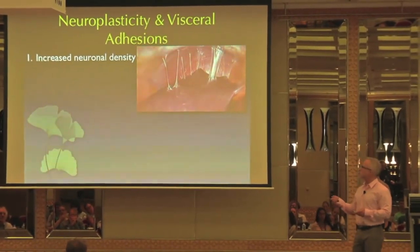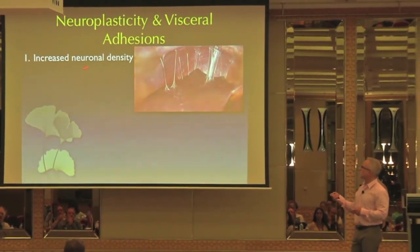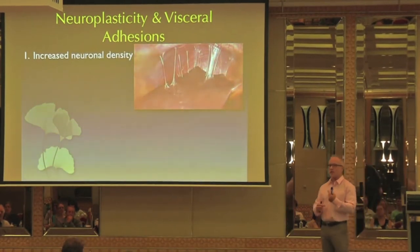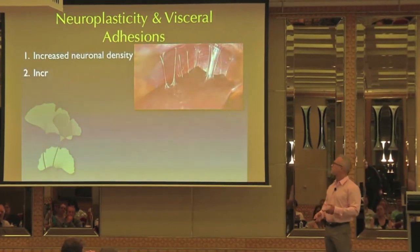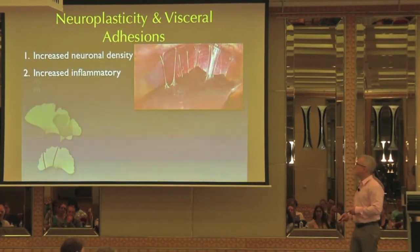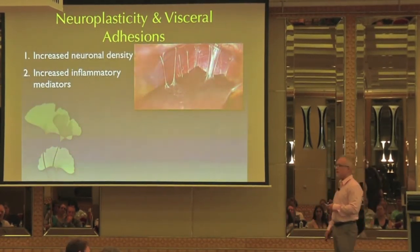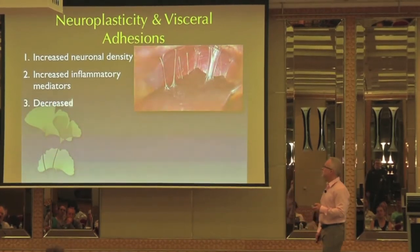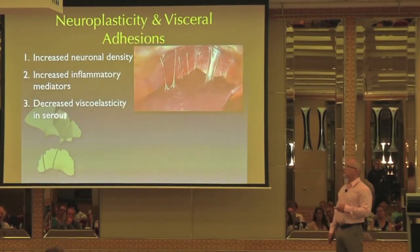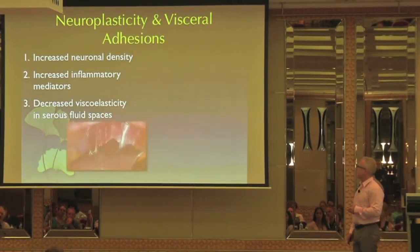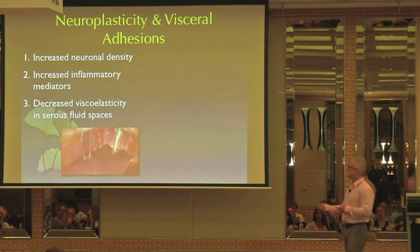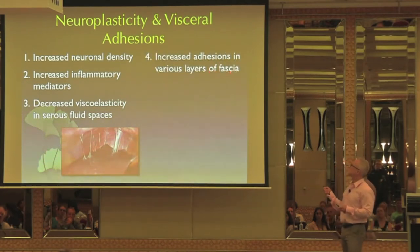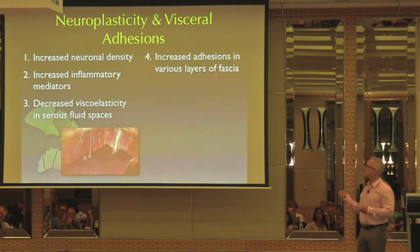We end up with increased neuronal density — we talked about how we have that increase in neurons. Increased inflammatory mediators, the cytokines that get produced. Decreased viscoelasticity in the serous fluid space. Increased adhesions in the various layers of the fascia.